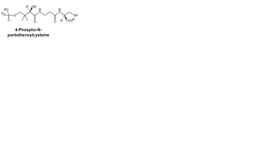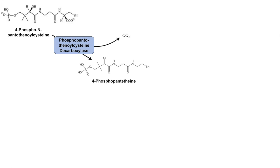The next process takes place once we have 4-phosphopantothenoyl cysteine — it gets acted on by the enzyme phosphopantothenol cysteine decarboxylase. A decarboxylase enzyme removes a CO2, so it decarboxylates 4-phosphopantothenoyl cysteine to give us 4-phosphopantotheine. That CO2 comes from this portion of the molecule here — we've essentially removed this section, releasing a CO2. Here, circled, is the carboxyl group that's actually removed.